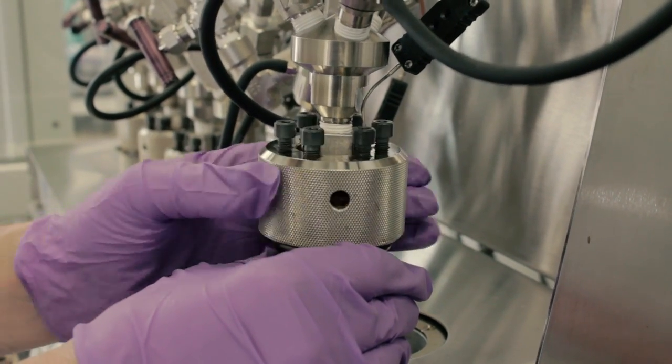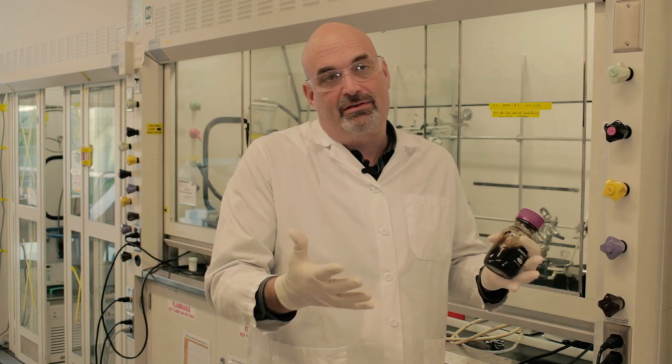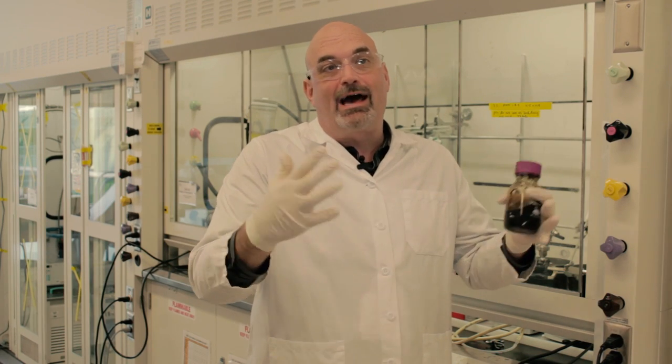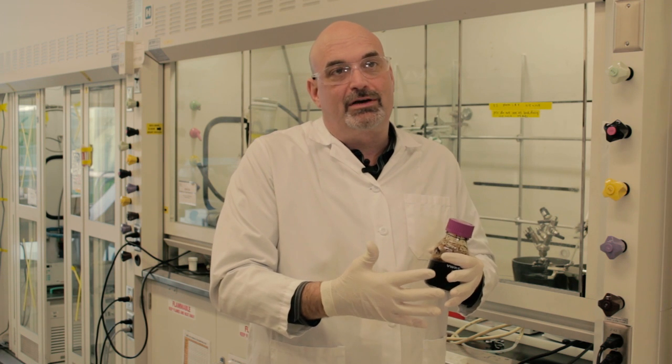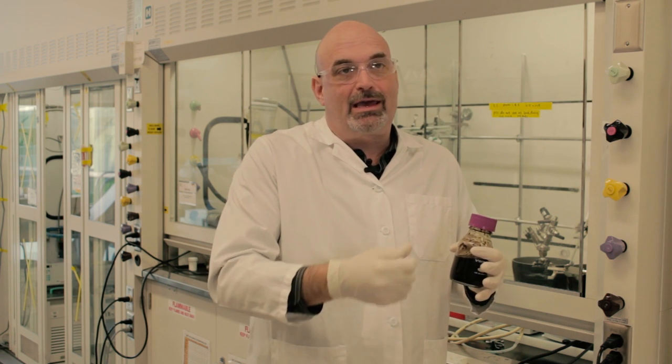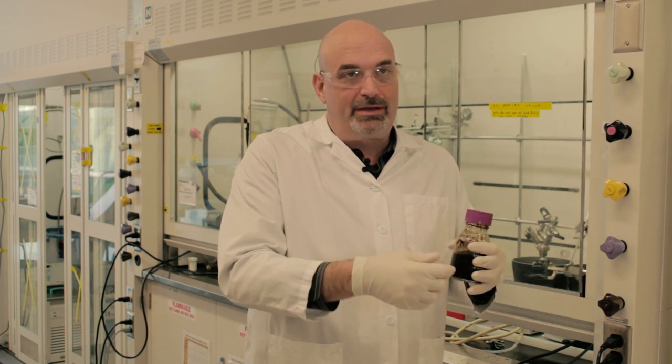The basic premise is that these components in the plant cell wall would rather interact and be hanging out with the ionic liquid than they would with each other. Just like you take a polymer and you put it into a solvent and it dissolves, we're doing the same thing. But in this case, the polymers are the plant cell walls.